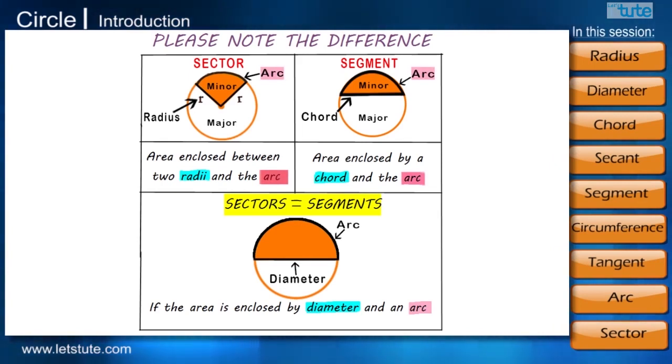But the difference is that sectors are enclosed by two radii and segments are enclosed by a chord. And when that chord is a diameter, sectors are equal to segments.